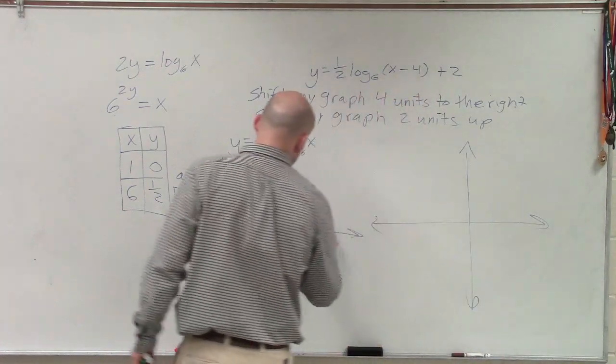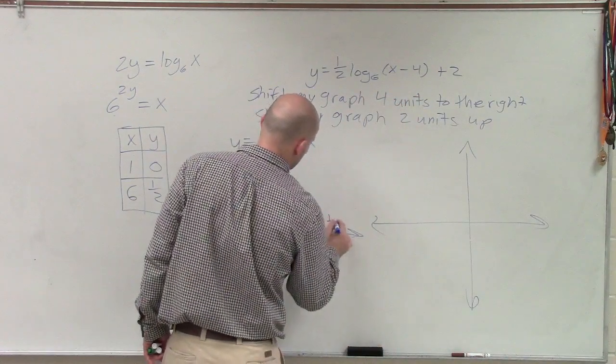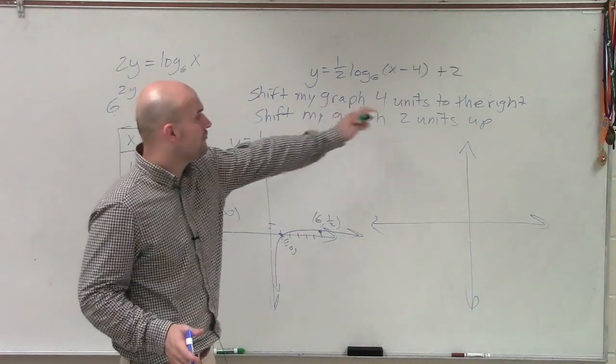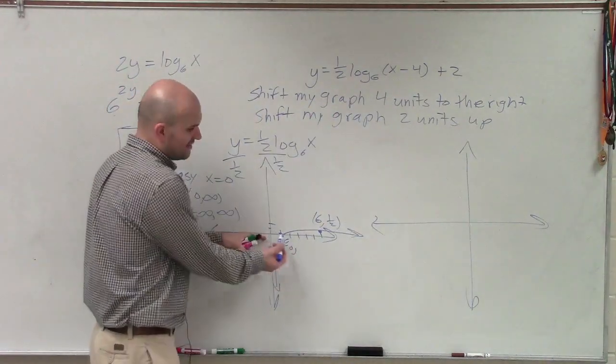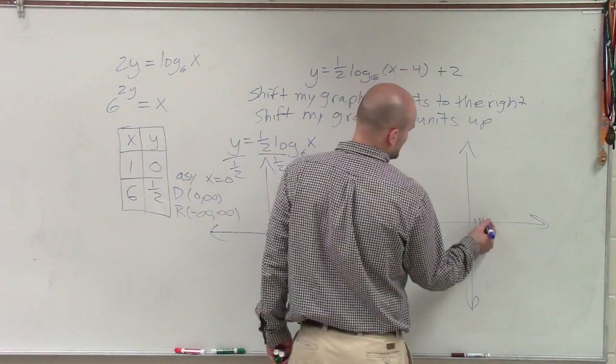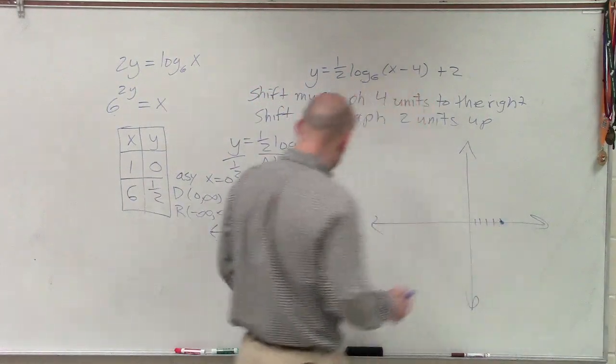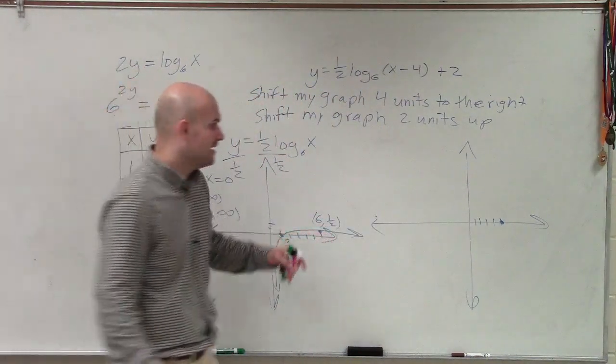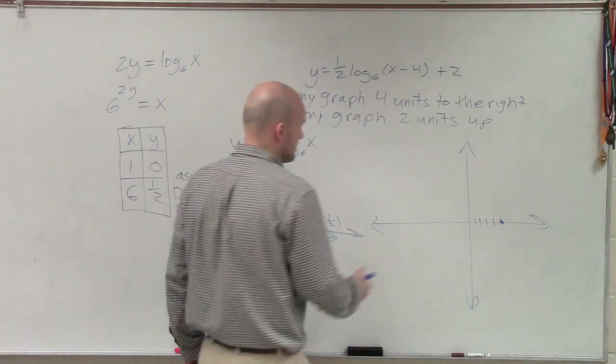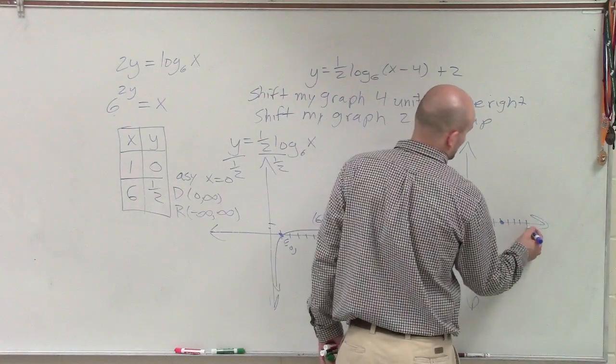But the main important thing what I want to do is take these points, and what I'm going to do now is now transfer these four units to the right. So instead of dealing with the point 1 comma 0, I'm now going to deal with the point 5 comma 0. 1, 2, 3, 4, 5. And instead of dealing with the point 6 comma 1½, I'm now going to deal with a point 10 comma 1½. So 5, 6, 7, 8, 9, 10.